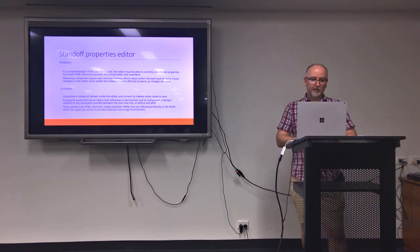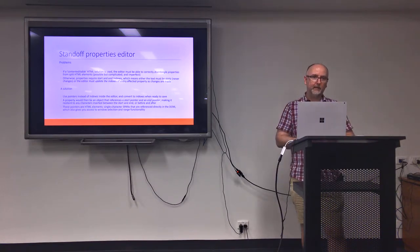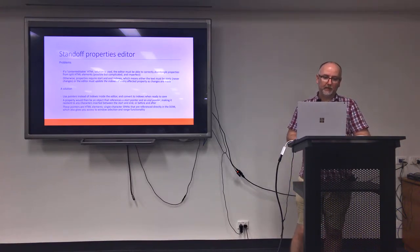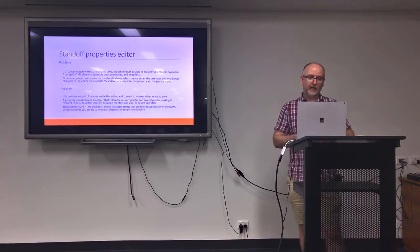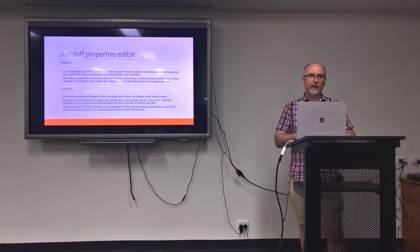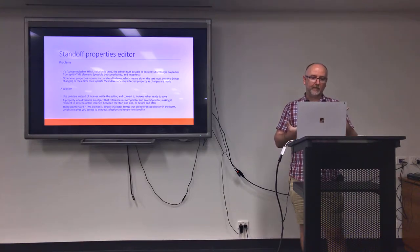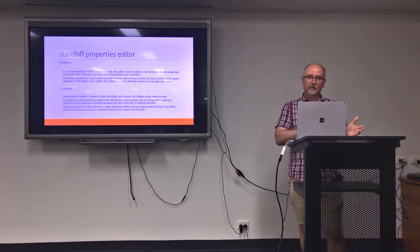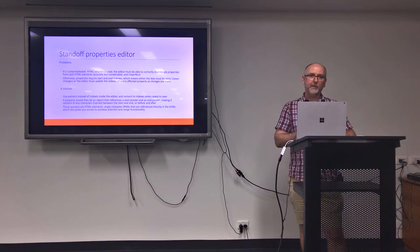There are a couple of ways you can do it. You can have these indexes which you update inside your properties, but you'd have to continually be updating them, and the more you add, the more sluggish the system would become. So I had the idea of working with pointers instead. I take my text, split it into an array of spans — one character per span. A span is an object, and my property can therefore refer to an object reference. This gives a degree of resiliency where if I'm adding text into the document, because I'm dealing solely with pointers, I don't have to worry about updating indexes.